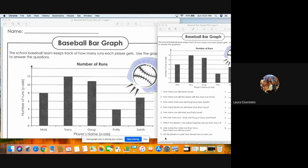Number six, who has more runs, Mark and Doug or Tracy and Patty? So you would have to do it twice. You'd have to follow your two steps twice. You'd have to figure out how many do Mark and Doug have together when you add them up, and how many do Tracy and Patty have together when you add them up, and then figure out who has more, Mark and Doug or Tracy and Patty.